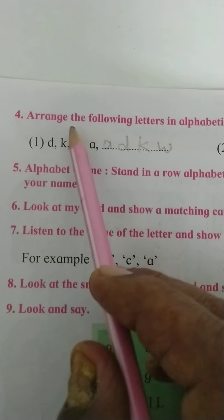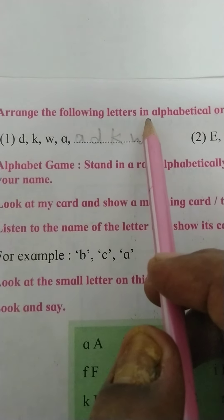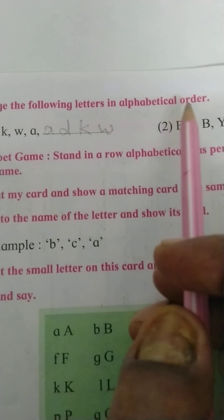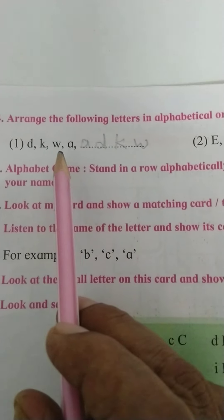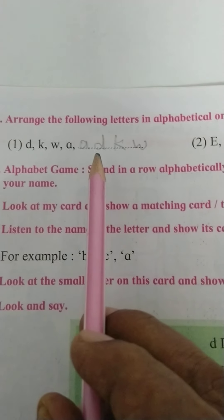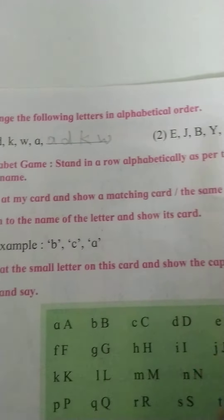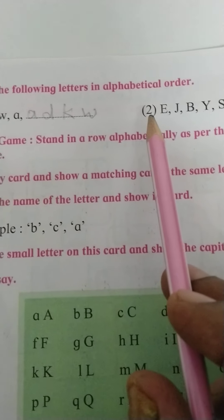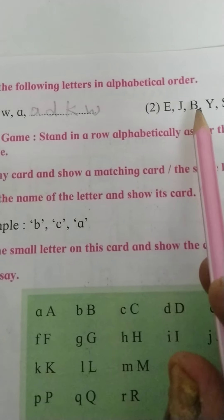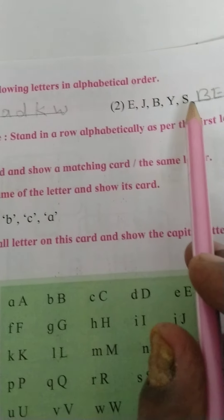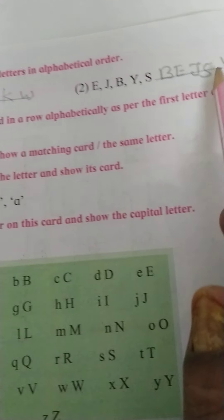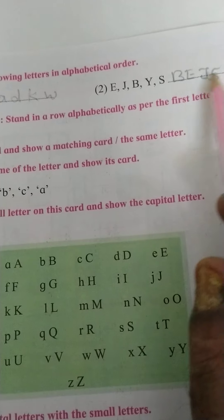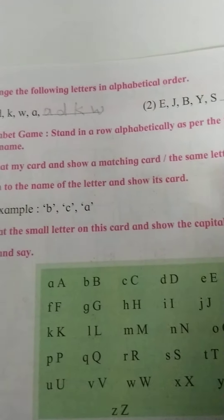See here, point 4: arrange the following letters in alphabetical order. In this way, d k w a becomes a d k w. Here point second, e j b y s becomes b e j s y. It is alphabetically ordered, alphabetical order.